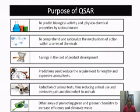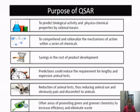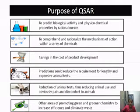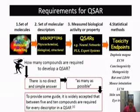The purpose of QSAR is: first, to predict biological activity and physiochemical properties by rational means; second, to comprehend and rationalize the mechanism of action within a series of chemicals; third, saving in the cost of product development; fourth, prediction could reduce the requirement for lengthy and expensive animal tests; fifth, reduction of animal tests, thus reducing animal use and pain and discomfort to animals; and finally, promoting green and greener chemistry to increase efficiency and eliminate waste.